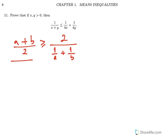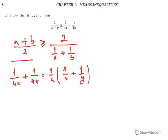If you consider 1 over 4x and 1 over 4y as the terms, then 1 over 4x plus 1 over 4y equals 1 over 4 times (1 over x plus 1 over y). If you apply the AM-HM inequality here, that is greater than or equal to 1 over 4 times 2 divided by (1 over (1 over x) plus 1 over (1 over y)).